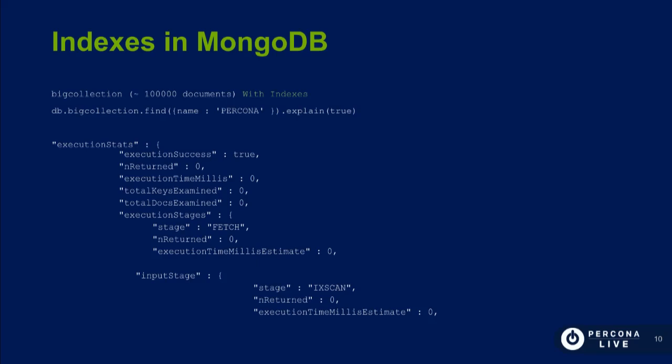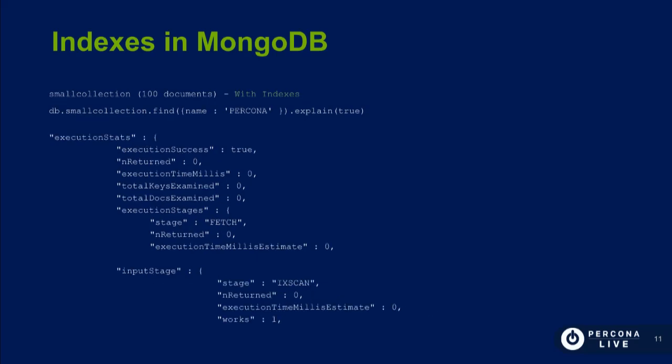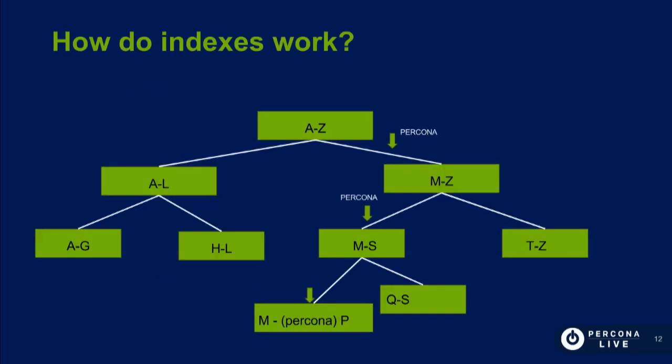When we have an index in place, it uses the index to optimize the query — looking first at the index I showed, then going to check the data on disk. This is basically a B-tree, organized by letter in this case because my filter is based on name. We have the leaf page here.